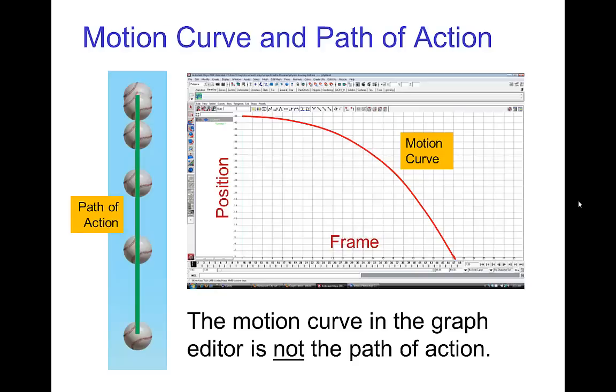One last thing. It's important that you keep in mind that the path of action is not the same as the motion curve that you might see in a graph editor. In this example, if a ball is falling straight down, then we have a very simple path of action. The path of action is a straight line as the ball falls straight down.